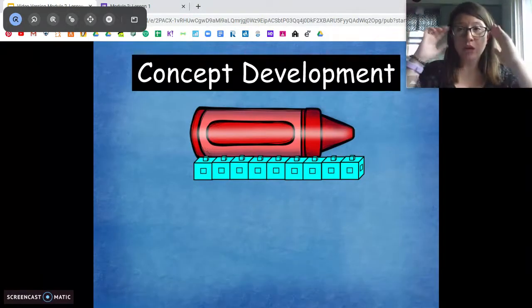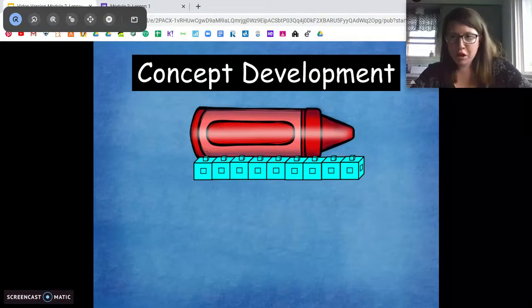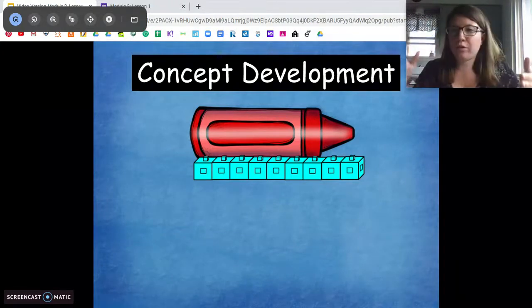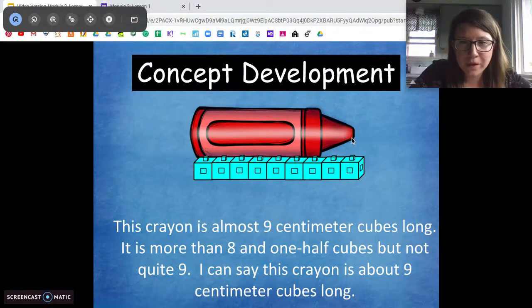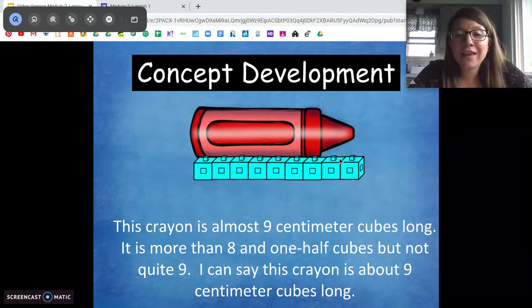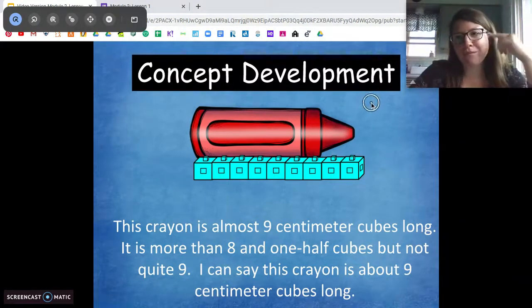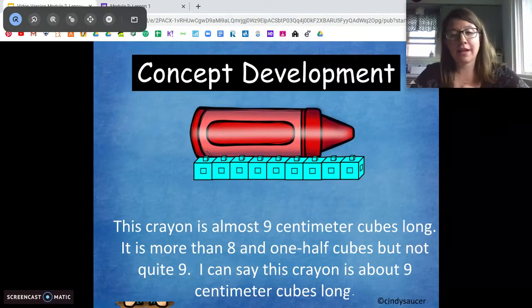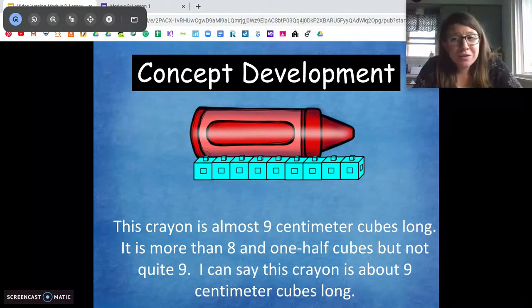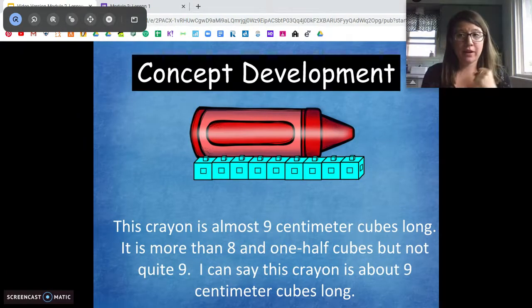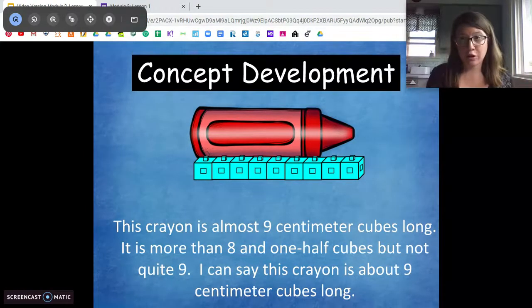All right. So I measured a crayon. Is there anything wrong with the way I measured this crayon? No. Right? They're all lined up and it goes end point to end point. There's no overlaps, no spaces. Now this crayon is almost nine centimeter cubes long. But as you can see here, the cube kind of goes over the end. That's okay. It's more than eight and a half cubes, but it's not quite nine. So it's like three quarters of the way there. It's almost at nine. So instead of just being like, we don't know. We can't figure it out. We can say this crayon is about nine centimeter cubes long. It's kind of like an estimate that lets the person know that it's not exactly nine, but it's close enough so that if we were to measure it, we would probably get the same. That word about is very important in our measuring for this unit. So we would say when it's not exact, we would say, I would say this crayon is about nine centimeter cubes long. Sound good?